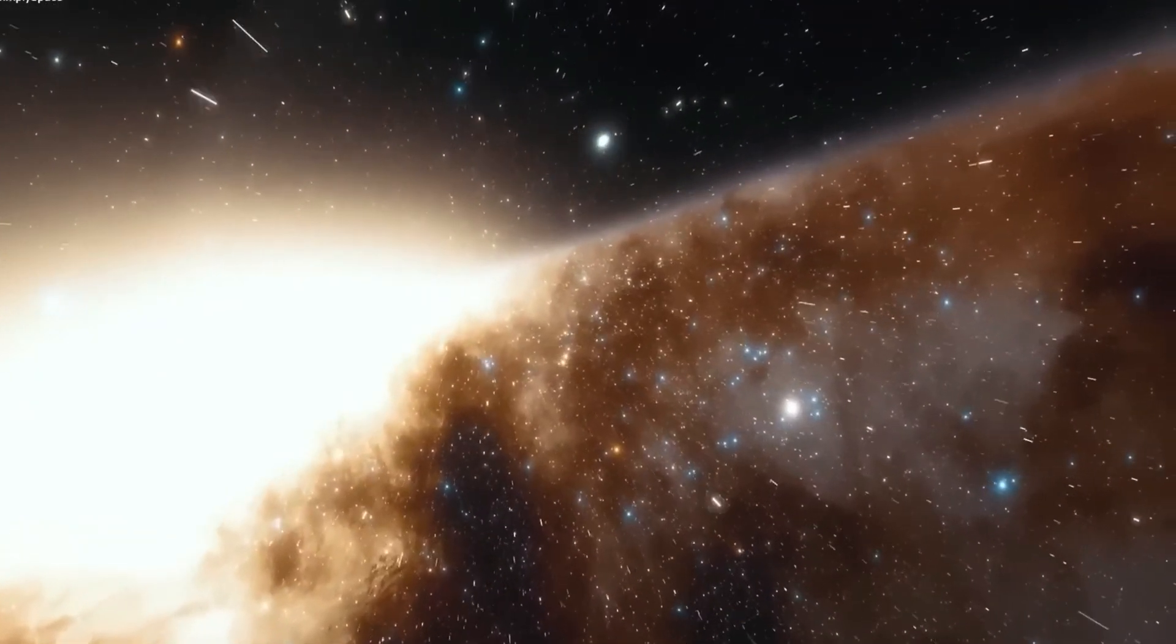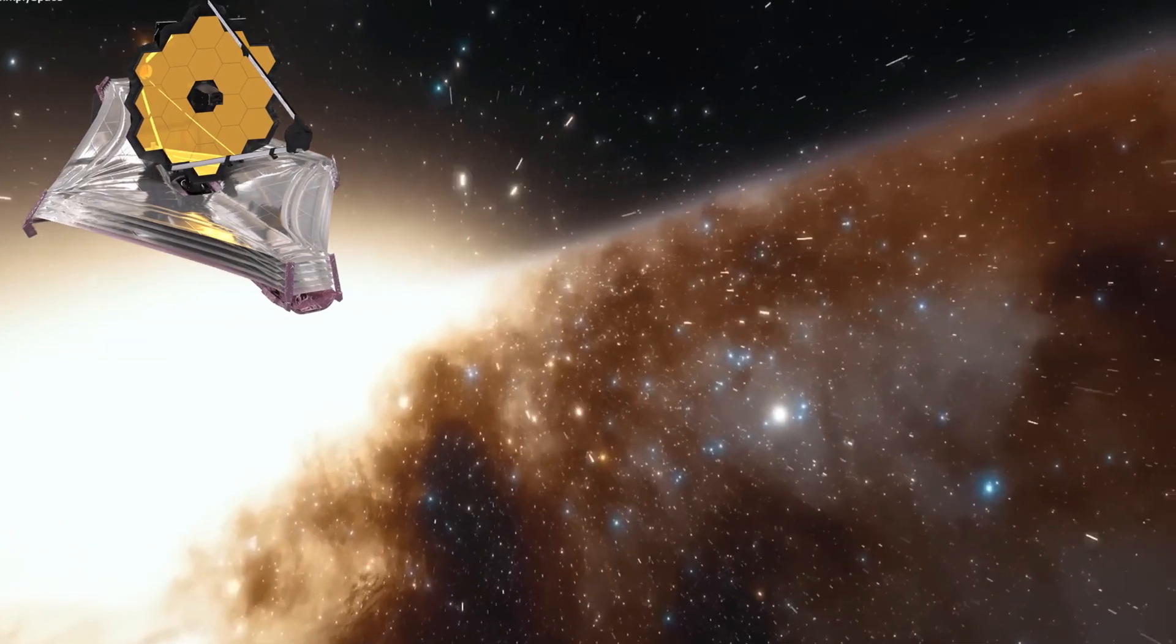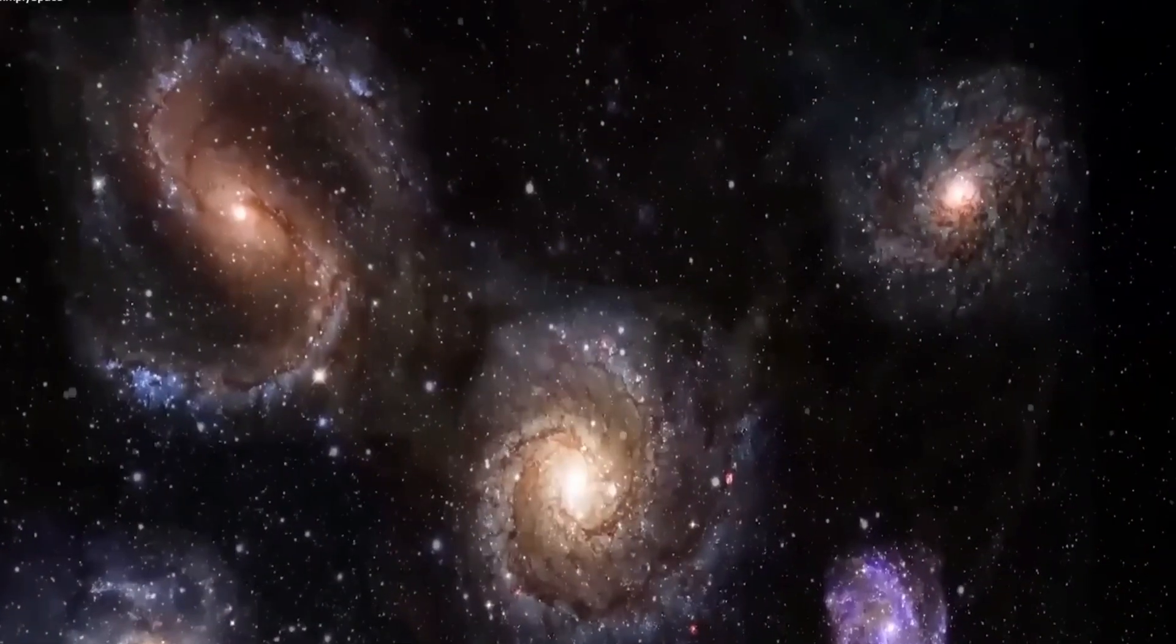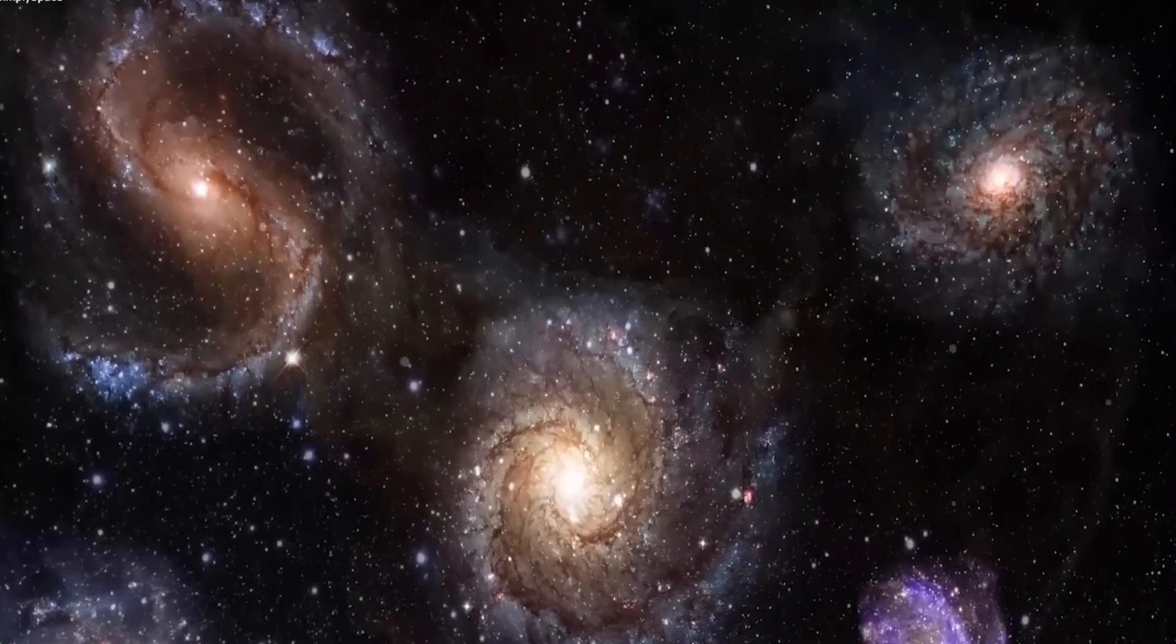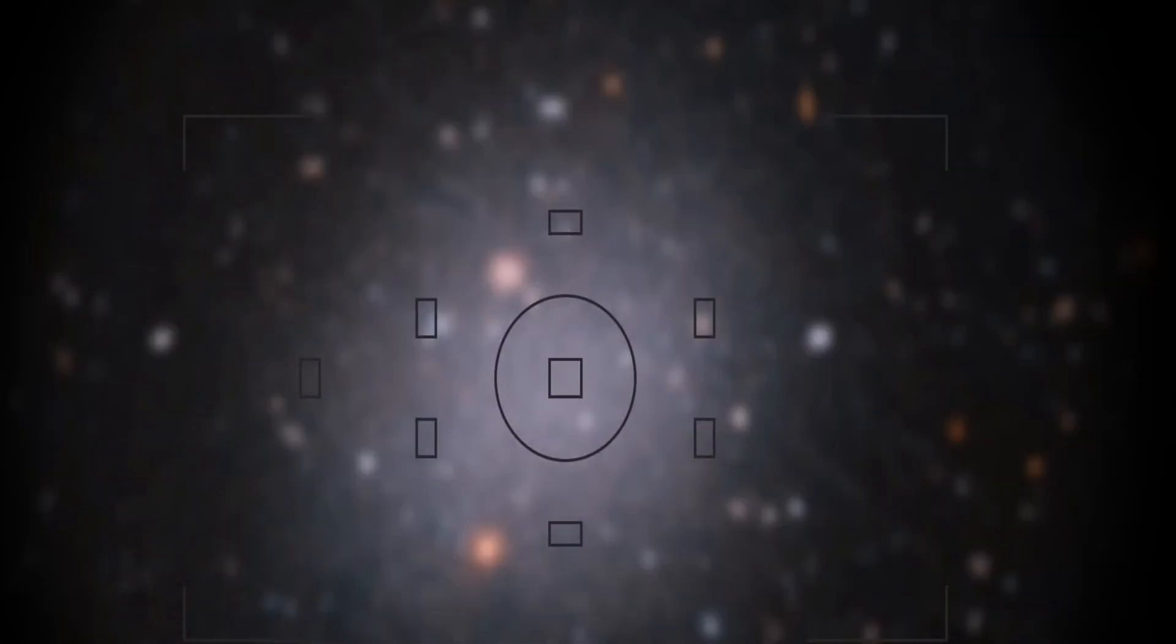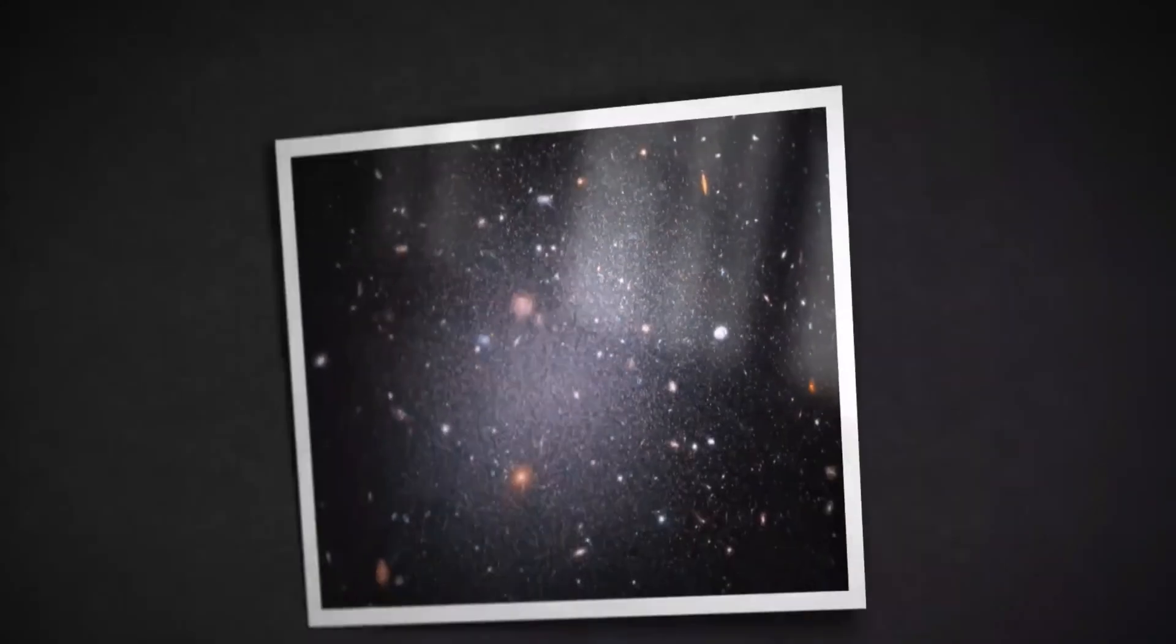The age and abundance of galaxies in the James Webb Space Telescope images present further complications for the Big Bang theory. By using infrared filters, astronomers can estimate the age of stars within these distant galaxies. According to the theory, these galaxies should represent a time around 400 to 500 million years after the Big Bang.